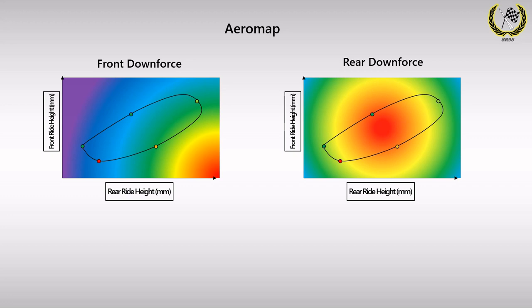This was the hypothetical aero map that was used last time around. The red areas depict higher levels of downforce while the gradual shift to violet indicates the gradual loss in downforce. In order to get the most out of the front wing, we need a very low front ride height and a relatively high rear ride height. The rear wing performance tends to work best in a zero rake angle position.